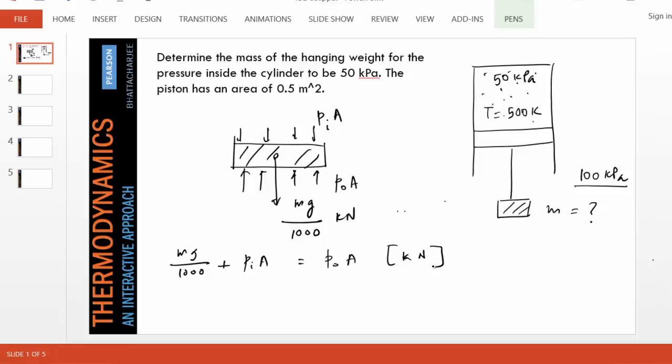Now that we have a balance of forces—the vertical force balance—because the piston is not accelerating, the upward force must equal the downward force. Solving and rearranging this equation, we can write mg equals area times p0 minus pi times 1000.